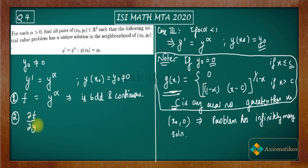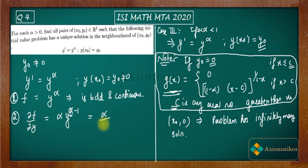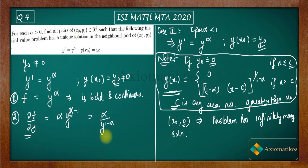For condition two: ∂f/∂y = α·y^(α−1). Because alpha ∈ (0,1), the exponent alpha minus one is negative, so we can write this as α / y^(1−α). Notice that if y₀ = 0 then ∂f/∂y would be unbounded near (x₀, 0). This is a hint for why y₀ = 0 causes problems. But since y₀ is non-zero, 1/y^(1−α) is a continuous, nice-looking function.